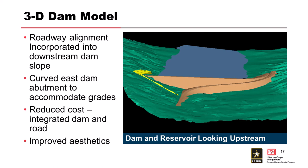A 3D image provides a better overview of the project — showing the county highway coming up the downstream slope to the abutment, the dam, and the spillway off on the right abutment.